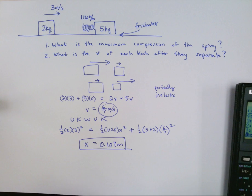x equals 0.107 meters. So that is the maximum compression of the spring, 0.107 meters. And that answers our first question.